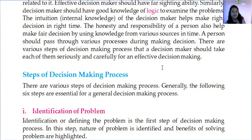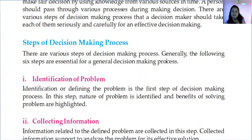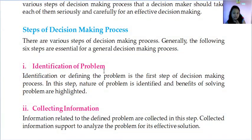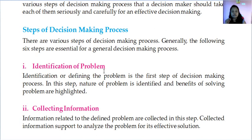There are various steps in the decision making process. Generally, the following six steps are essential. The first is identification of the problem — before making any decision, you need to know what the actual problem is and how it was created. For example, if an organization is facing a problem because of COVID-19 and is not able to provide salary to employees, that is the problem, and the cause is COVID-19. Then comes collecting information.